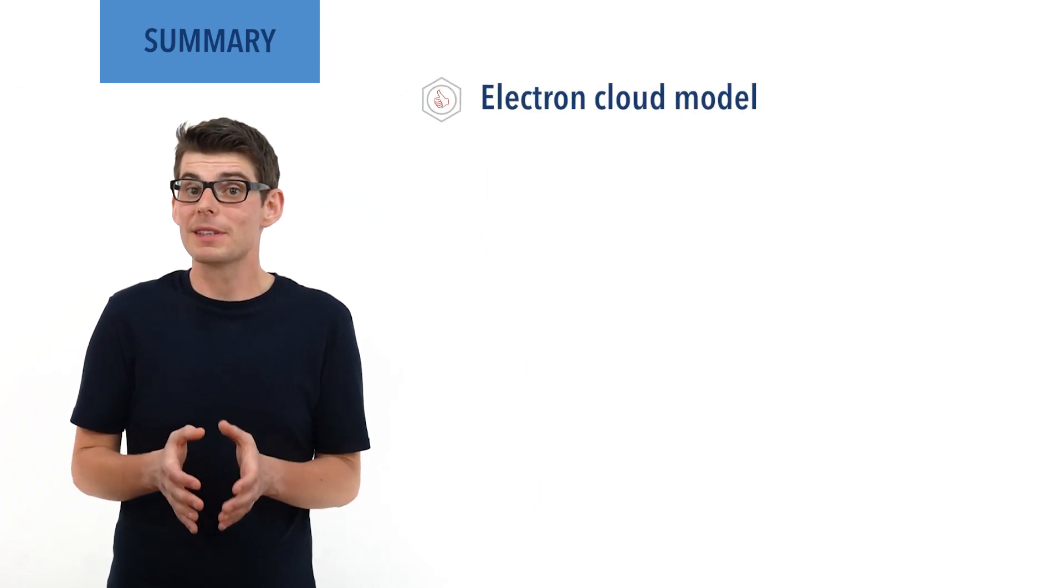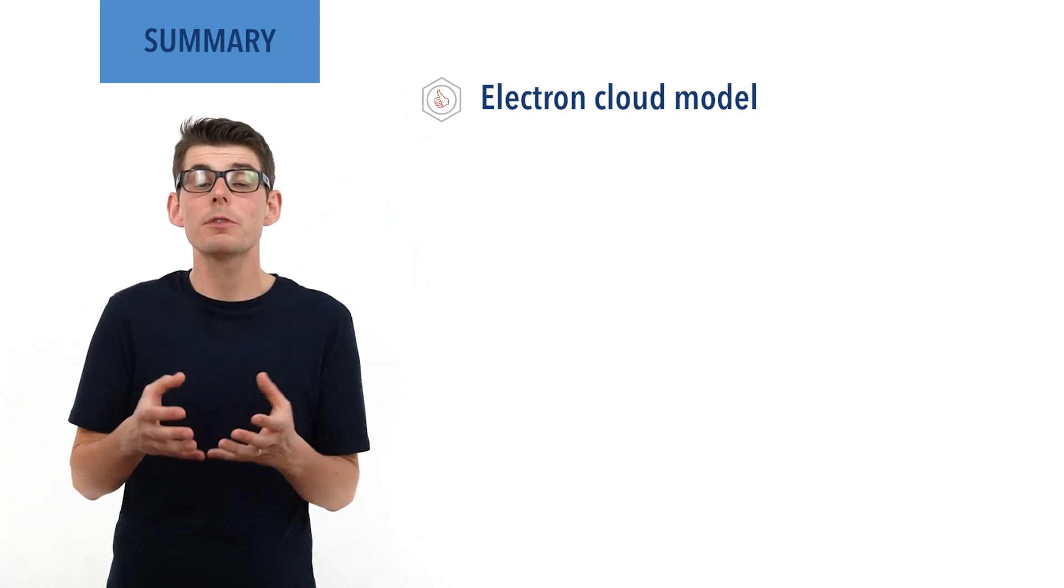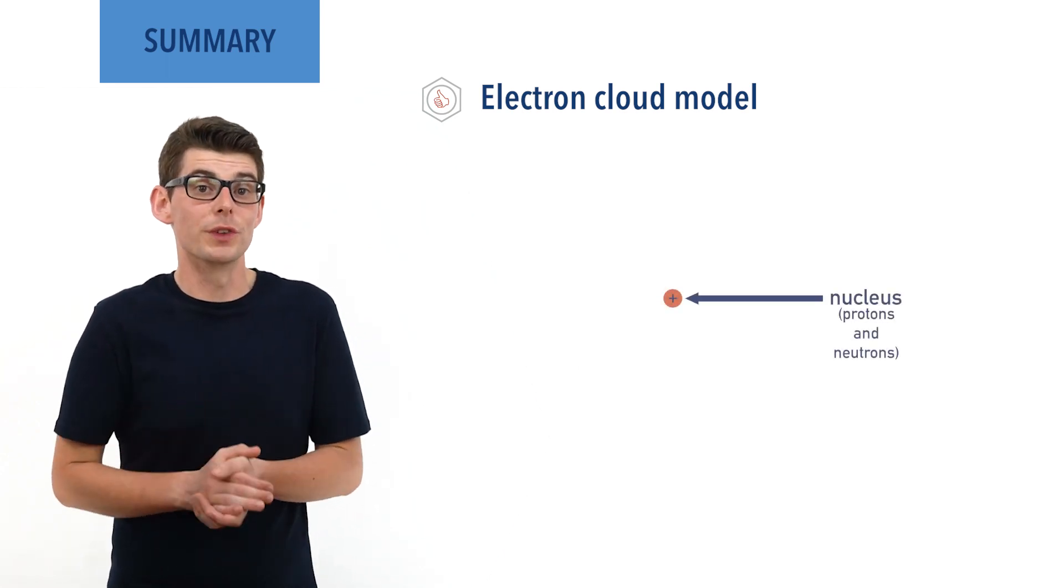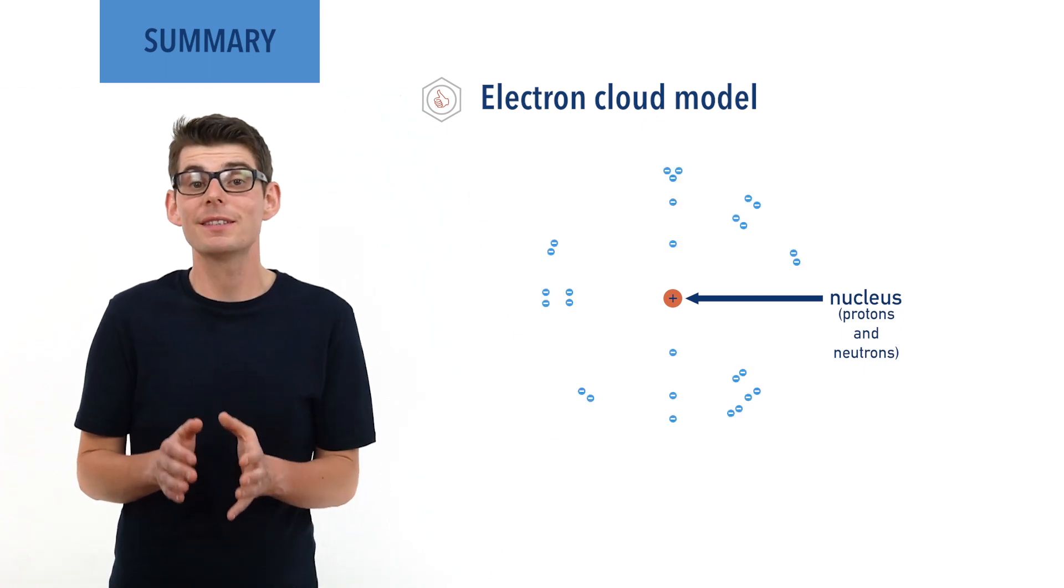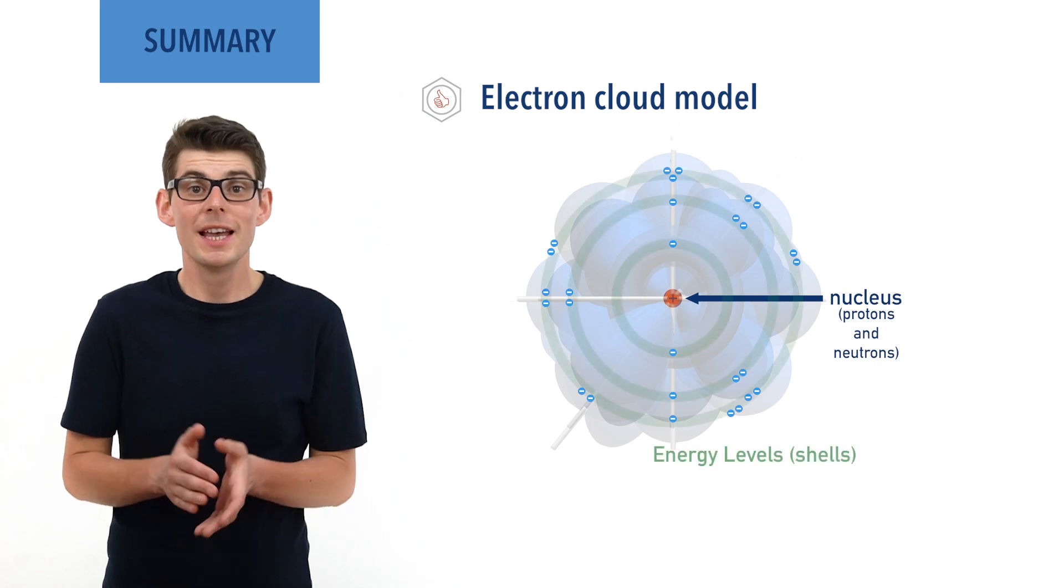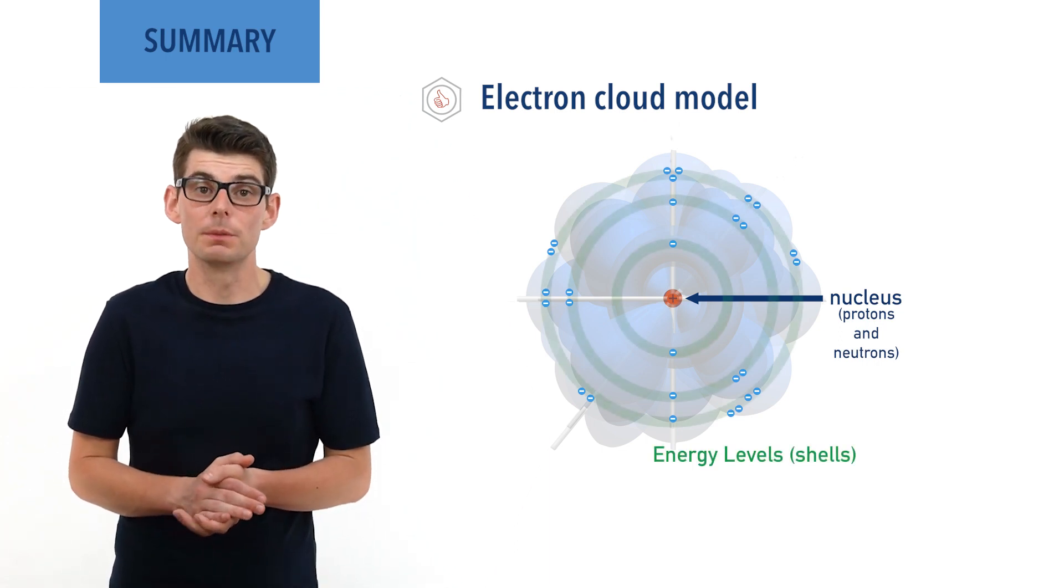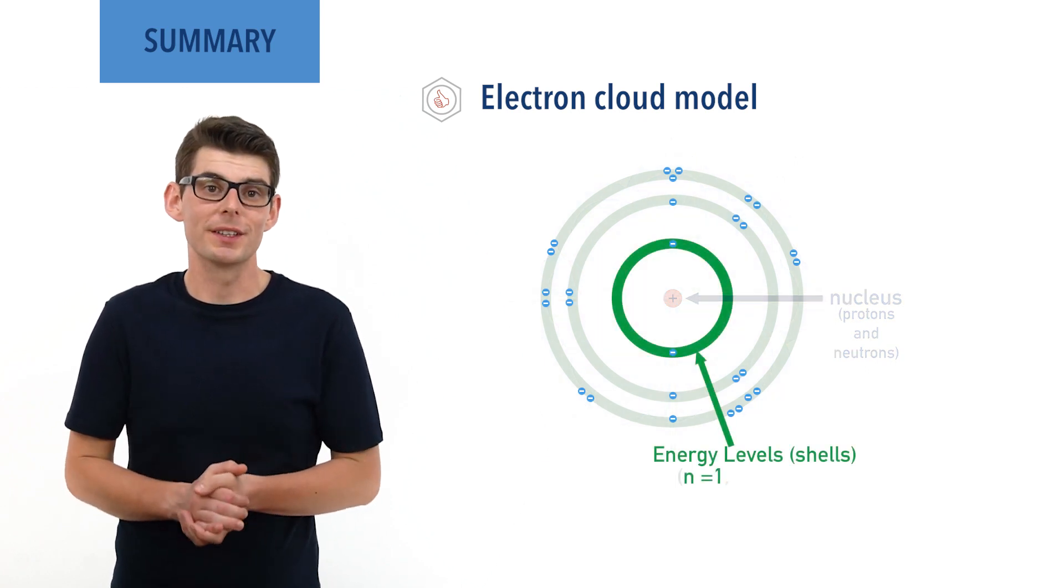The current model of the atom most frequently referred to is the electron cloud model. It describes an atom as having a very small dense region of positive charge made up of protons and neutrons, called the nucleus. The nucleus is surrounded by electrons that exist in orbitals within specific energy levels, or shells, labelled as principal quantum numbers, starting with the number 1 for the energy level closest to the nucleus.